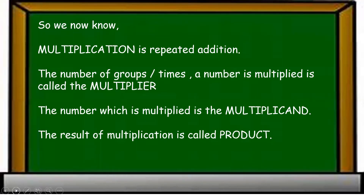Now we know: multiplication is repeated addition. The number of times a number is multiplied is called the multiplier, the number which is multiplied is the multiplicand, and the result of multiplication is called the product.